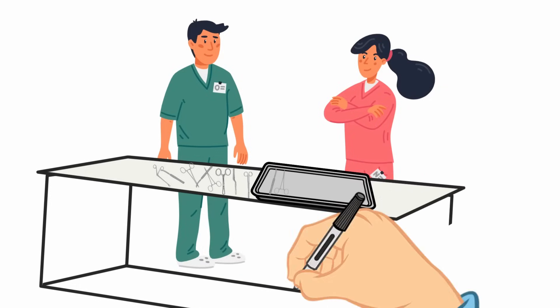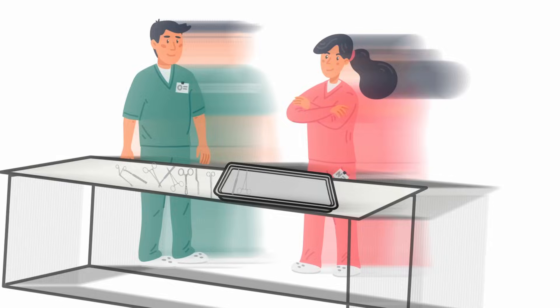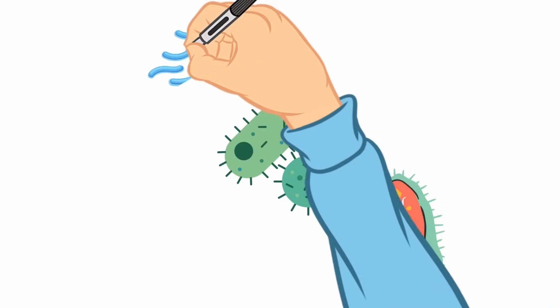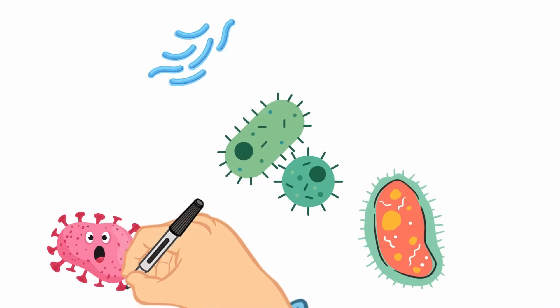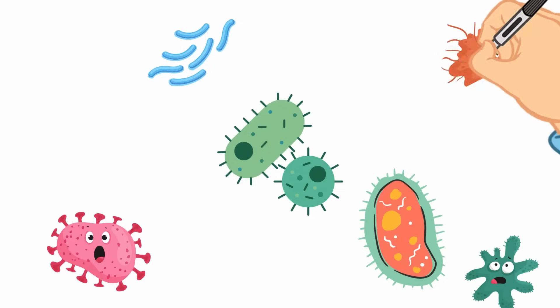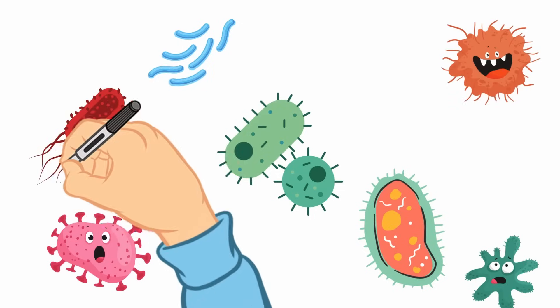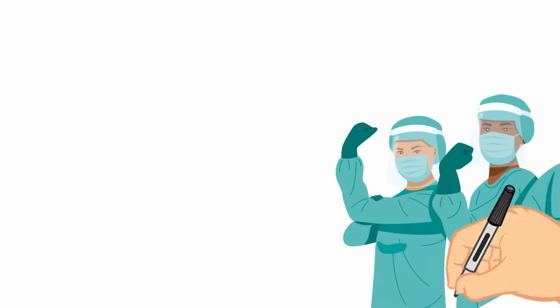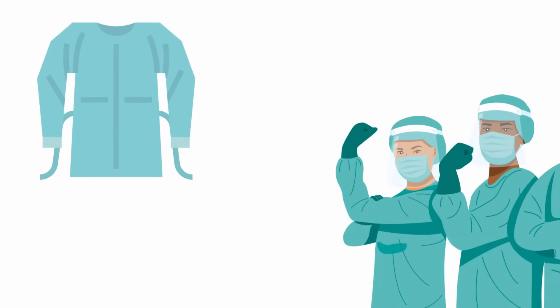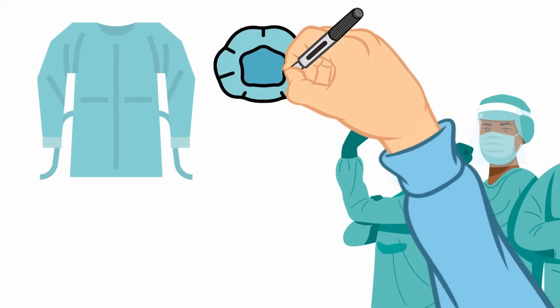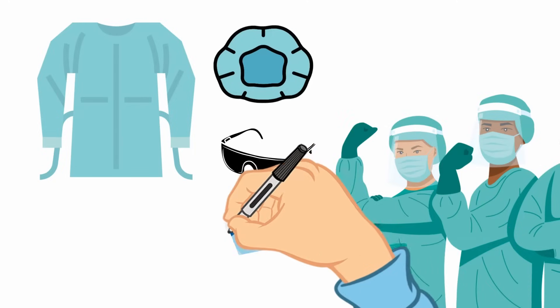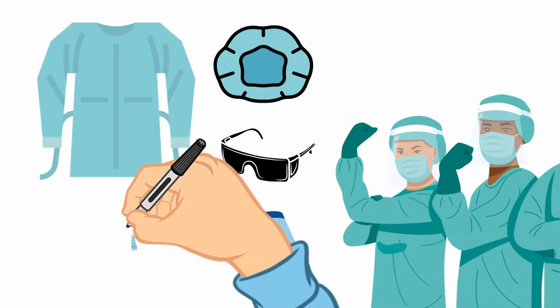Now, as we talked about earlier, those instruments carry a lot of different organisms and viruses that can be dangerous to patients as well as sterile processing technicians. That's why personal protective equipment, or PPE, is so important. When in the decontamination area, you must wear a liquid-proof gown, a bonnet or hat to cover your hair, eye protection whether glasses or a face shield, a surgical mask for respiratory protection, and heavy-duty liquid-proof gloves.